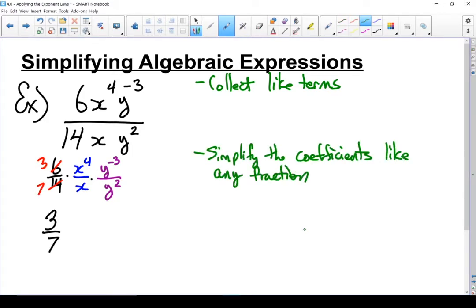Next, when I look at my x's and y's, I'm looking at a quotient of powers. So my x's, that's going to be x to the 4 minus 1. And my y's, it's going to be y to the minus 3 and subtract the denominator exponent, minus 3 minus 2.